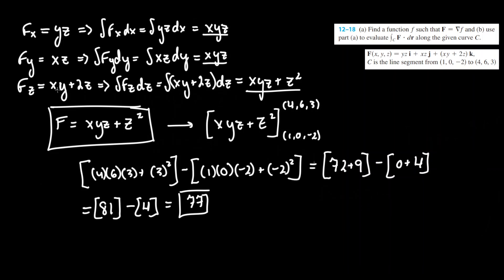So our function f was xyz plus z squared, and evaluating it between those two boundaries we got 77. Those are your two part answers. If you have any questions please leave it in the comments below, and good luck.